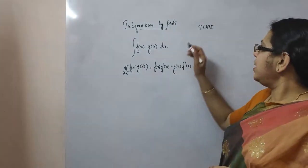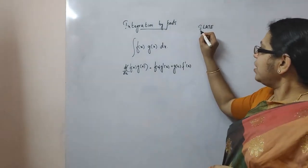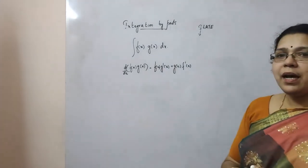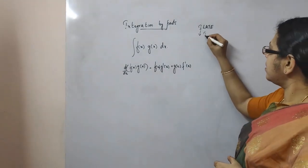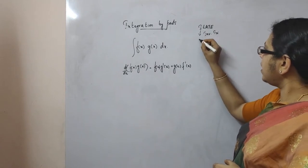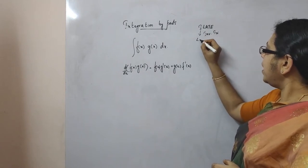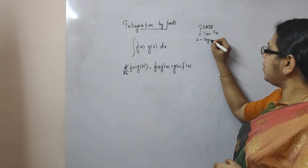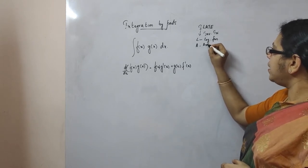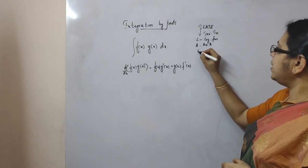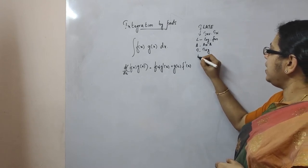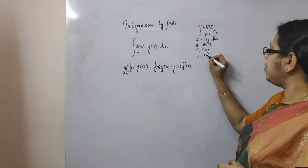What is ILATE? The I stands for inverse trigonometric function. L stands for logarithmic function. A stands for arithmetic functions. T stands for trigonometric functions. And E stands for exponential function.